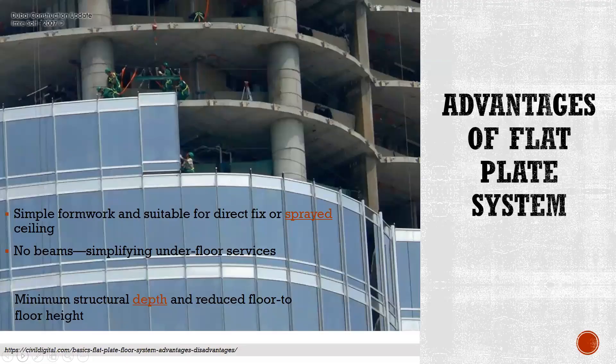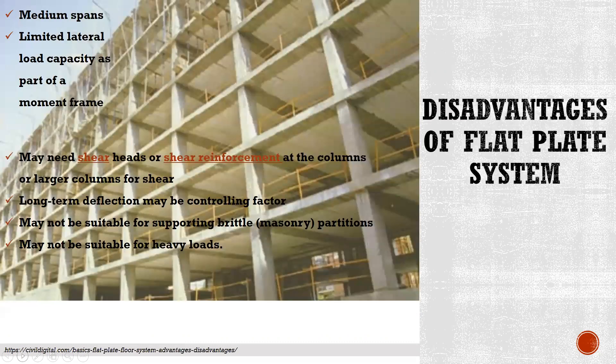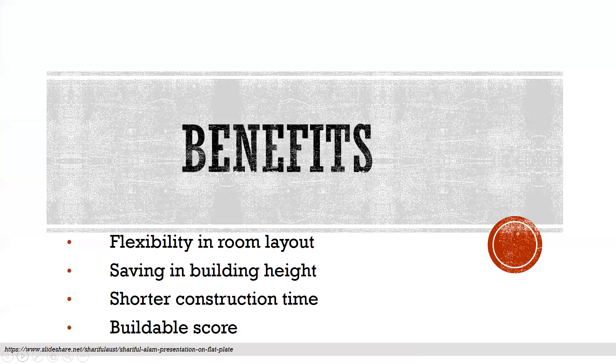Advantages and disadvantages of flat plate system. Advantages include: simple formwork suitable for direct fix or spray ceiling, no beams, simplified underfloor surfaces, and minimal structural depth with reduced floor height. Disadvantages include: limited to medium spans, limiting lateral load capacity as part of a moment frame, may need shear heads or shear reinforcement at the columns or larger columns for shear, long-term deflection may be a controlling factor, and may not be suitable for supporting heavy loads or partitions.